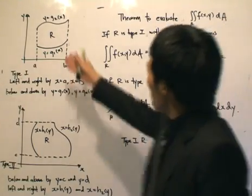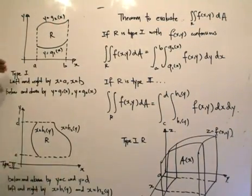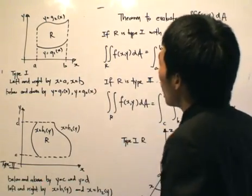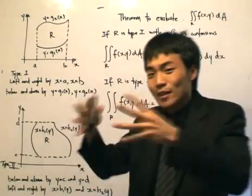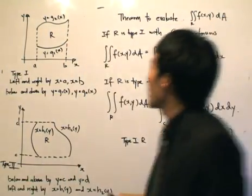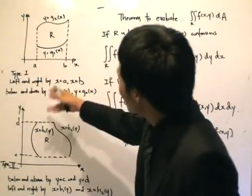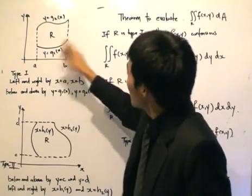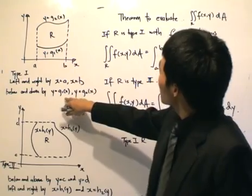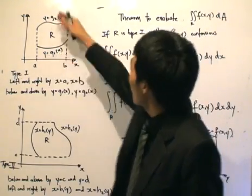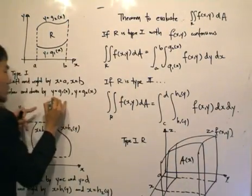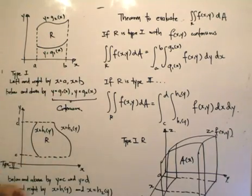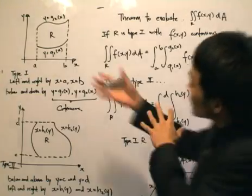Firstly, it's type 1. Type 1, as you can see, is the region R defined here. The z-axis is really shooting out of the whiteboard towards you. We are focusing on the region R because it's equally important — the solid is defined by the region R and the surface is defined by the function f. Type 1 is basically bounded on the left and right by x equals a and x equals b, and below and above by y equals g1 of x and y equals g2 of x. The functions g1 and g2 must be continuous.